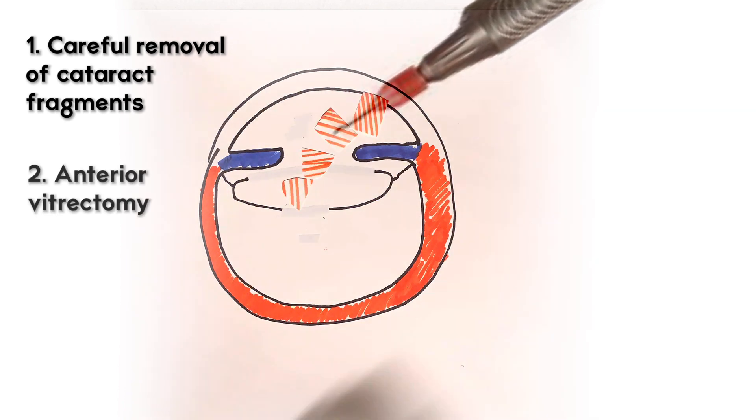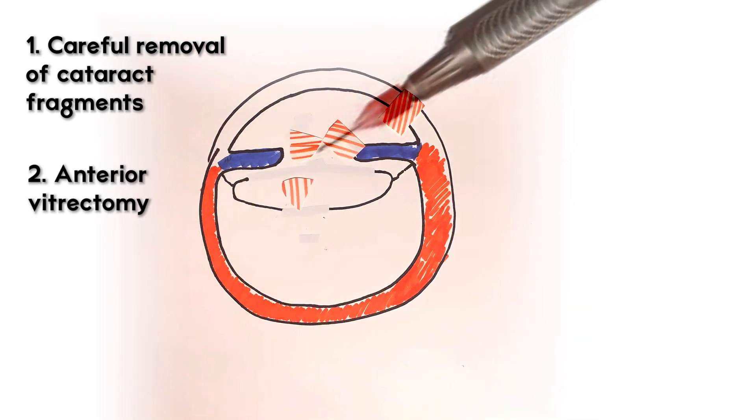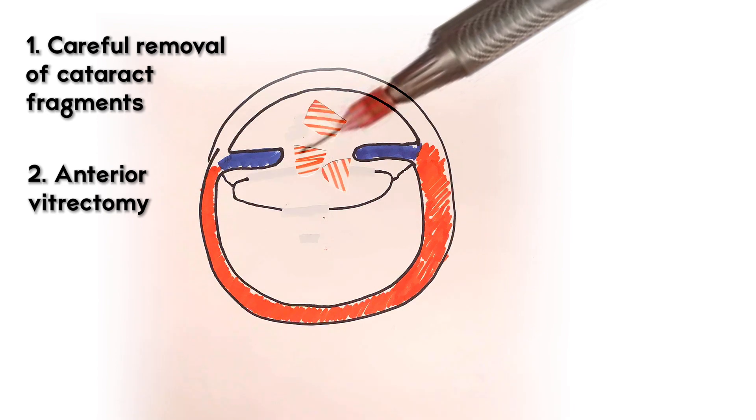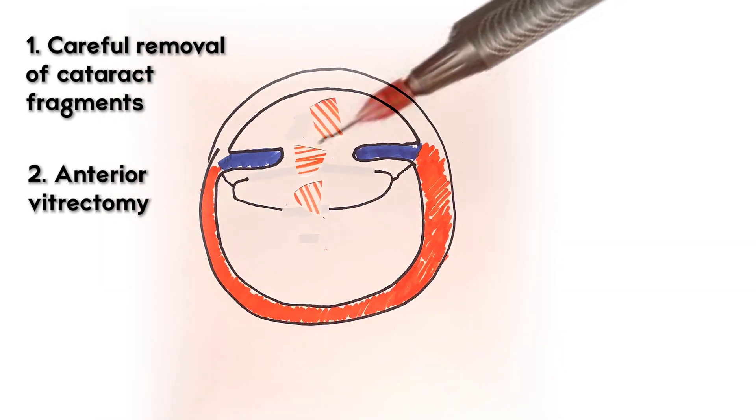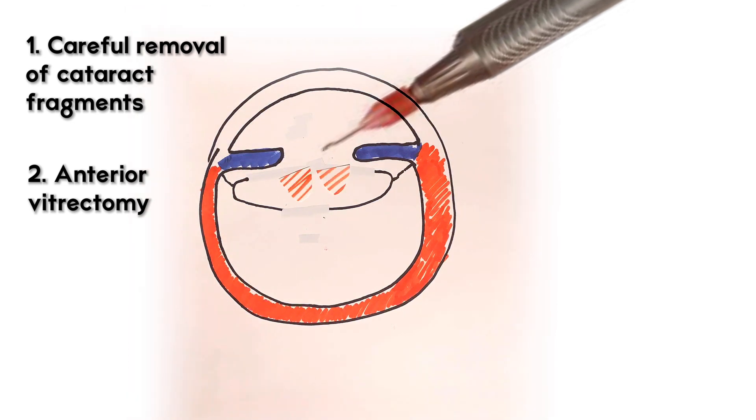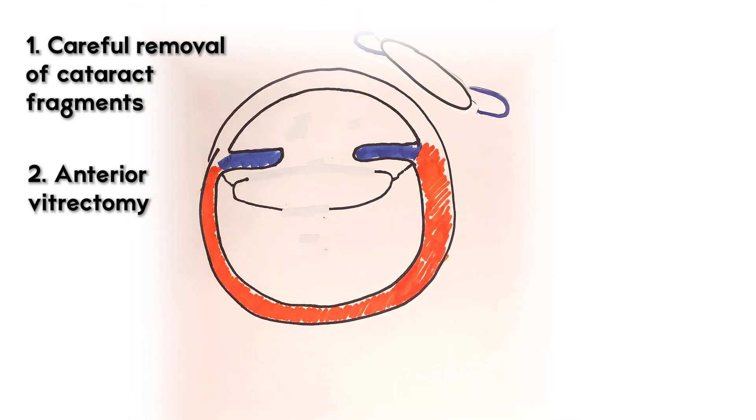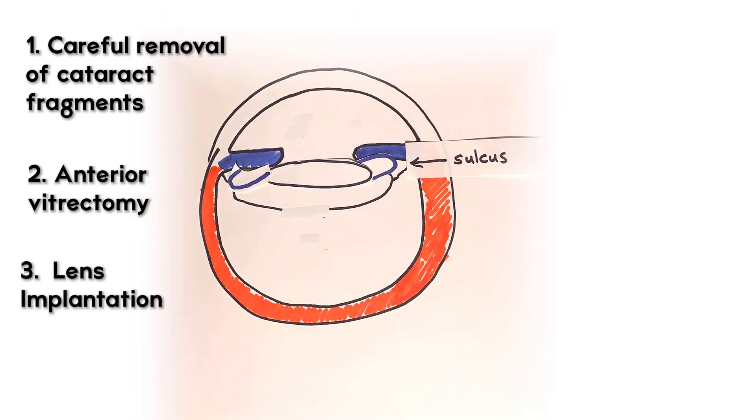This is done as carefully as possible to reduce vitreoretinal traction and posterior drop of cataract fragments. Then once the anterior structures are clear, a new intraocular lens implant is placed either in the sulcus with optic capture or in the capsular bag if there's still enough support.